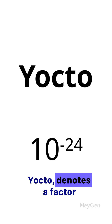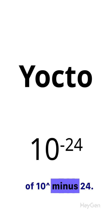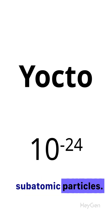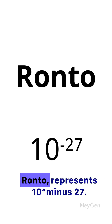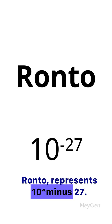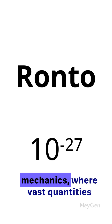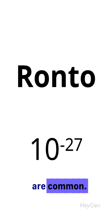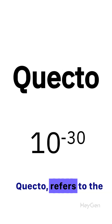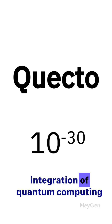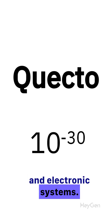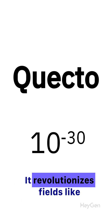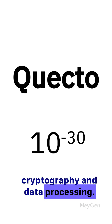Yocto denotes a factor of 10^-24. It is used to measure extremely small quantities, such as atomic and subatomic particles. Ronto represents 10^-27. It's crucial in fields like astrophysics and quantum mechanics. Quecto refers to 10^-30, revolutionizing fields like cryptography and data processing.